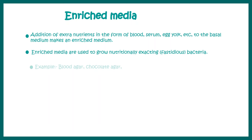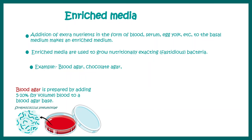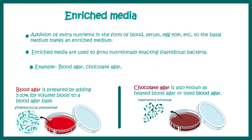Examples of enriched media include blood agar and chocolate agar. Blood agar is prepared by adding 5–10% sheep blood to the minimal media, and it is appropriate for the growth of Streptococcus pneumoniae and many other organisms. Chocolate agar is one version of blood agar where the plate is slightly heated and the blood cells are lysed. Haemophilus influenzae, among others, can grow in this particular media.